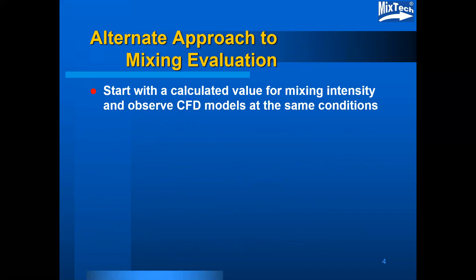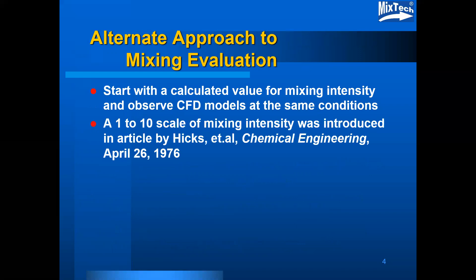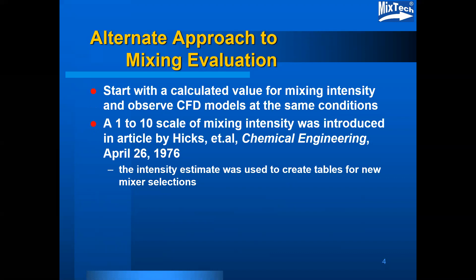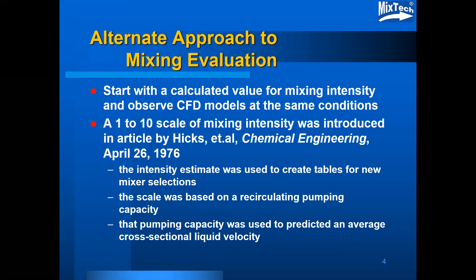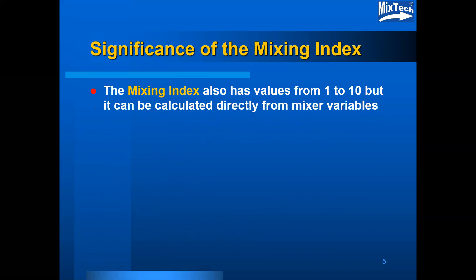An alternate approach to mixing evaluation is to start with a calculated value for mixing intensity and then observe how CFD or other processes are modeled for those same conditions. A 1 to 10 scale of mixing intensity was introduced in an article by Hicks and company in 1976. The intensity estimate was used to create tables for new mixer selections. The scale was based on a recirculating pumping capacity, and that pumping capacity was used to predict an average cross-sectional liquid velocity.